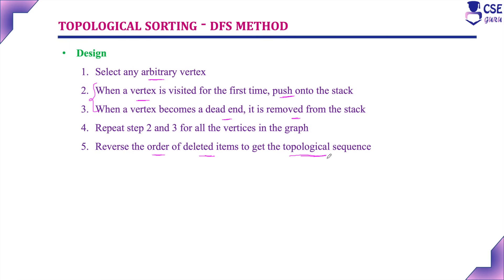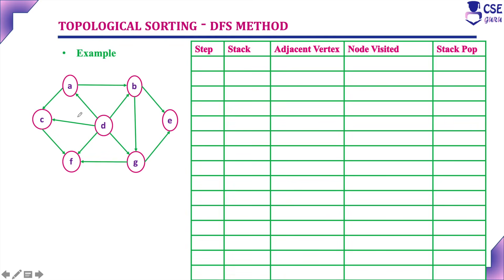Now we will discuss an example so you will understand better. For this given graph, we need to find the topological sorting using the DFS method. The first step is to select one vertex as the arbitrary vertex — here I am selecting vertex A as the arbitrary vertex.